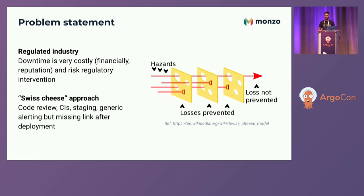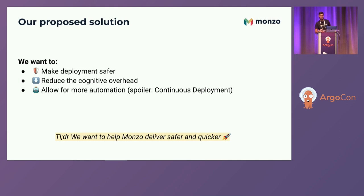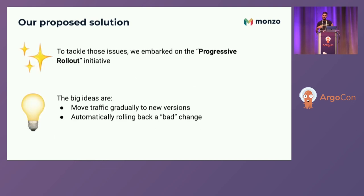In order to address this, we try to catch bad changes at multiple layers: code review, CI pipeline, a staging environment close to production, and general alerting. But we realized we didn't have anything after you deploy — you deploy and then it's on you. So we onboarded a progressive rollout initiative to move traffic gradually to a new version and automatically roll back a bad change.